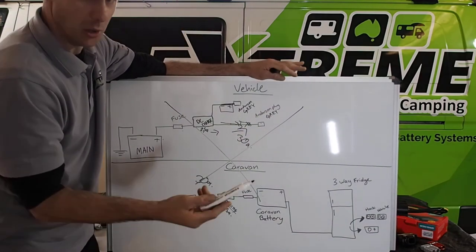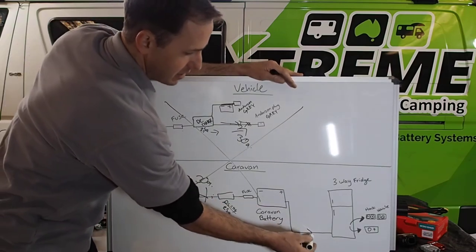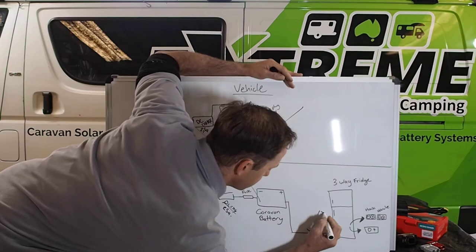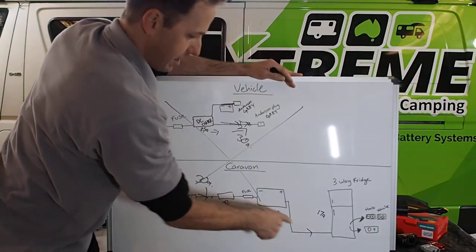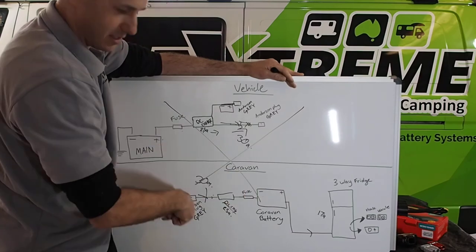And to boot, you've got a three-way fridge sucking 17 plus 17 amps out of that line. So, this poor DC charger is trying to charge this. This is just, it just doesn't work.